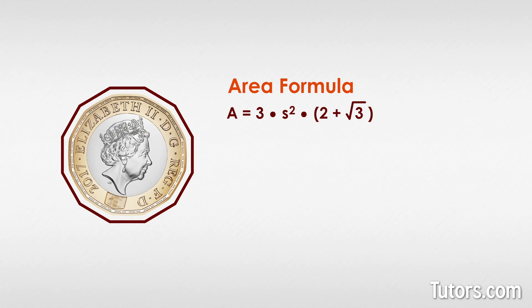As an example, the 2017 British one-pound coin is a regular dodecagon. One side of the coin is 6.78 millimeters in length. What is the area of this coin?